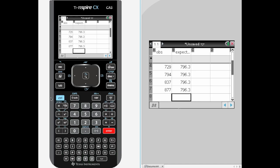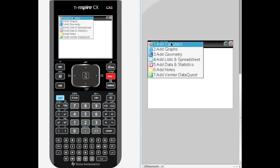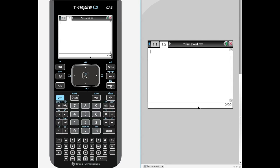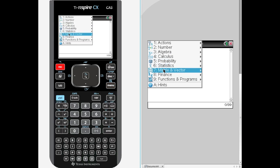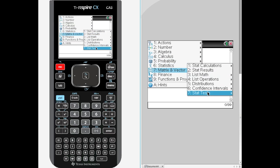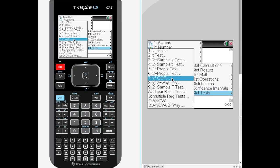And there we go. Alright. So now we want to do, you might be able to do this test in here, but I am going to go ahead and add a page. Add a calculator. And we are going to hit menu, or excuse me, escape that. Statistics, stats test, and do a chi-square goodness of fit.